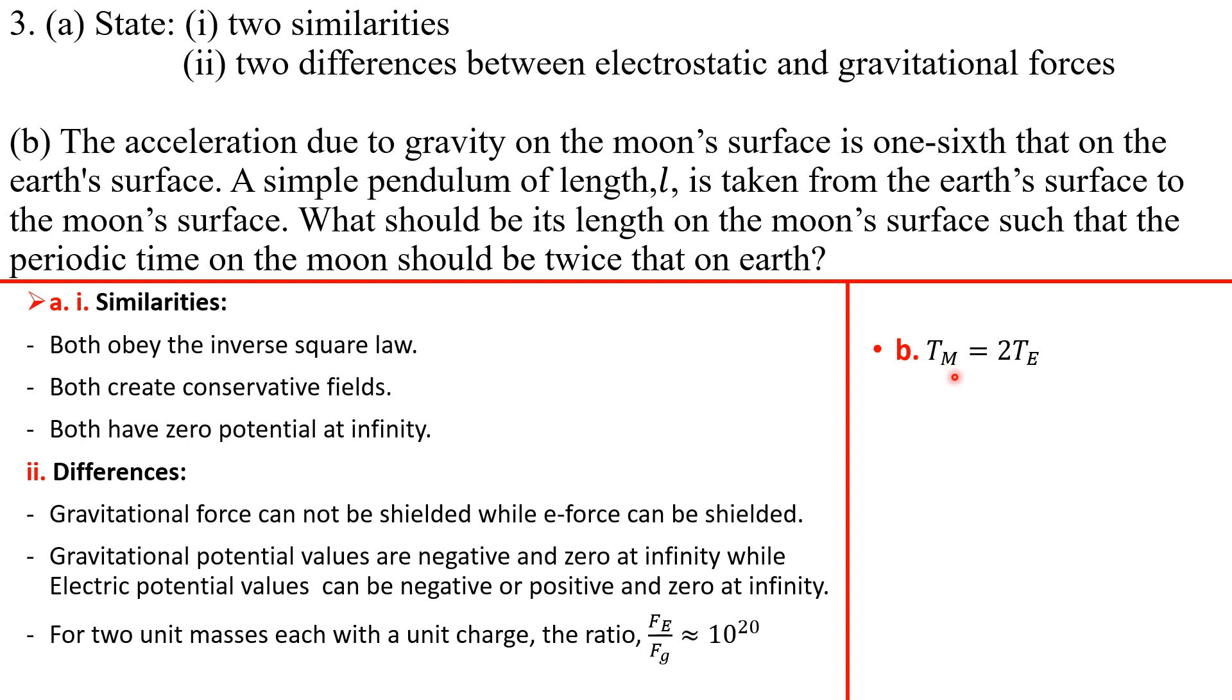So we want periodic time on moon to be two times that on the earth. What is periodic time of a simple pendulum? It's 2π√(l/g). So l on the moon divided by g on the moon equals what? 4π. Why are we having 4π here? Because this 2 has multiplied by 2π that was normally supposed to be here, so you're now 4π√(le/ge).